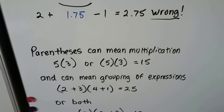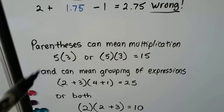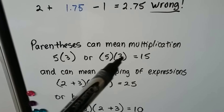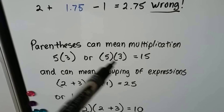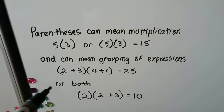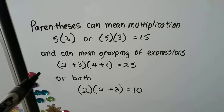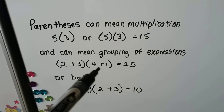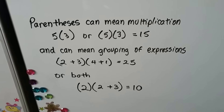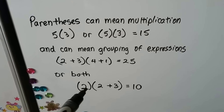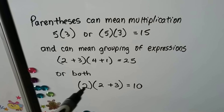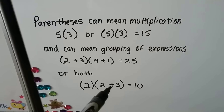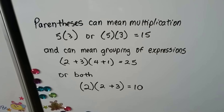Remember, parentheses can mean multiplication — 5(3) means 5 times 3, that's 15. Or both numbers can be in parentheses: (5)(3) is also 15. And they can mean grouping of expressions, like 5 times 5, which is 25. Or it could mean 2 multiplied by that 5, which gives us 10.